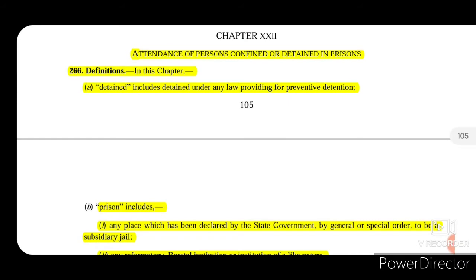Today we are going to talk about Chapter 22, which deals with attendance of persons confined or detained in prisons. This chapter is about the attendance of those persons who are confined or detained in prisons — attendance before the court. This is a tiny chapter, so let's move on quickly.